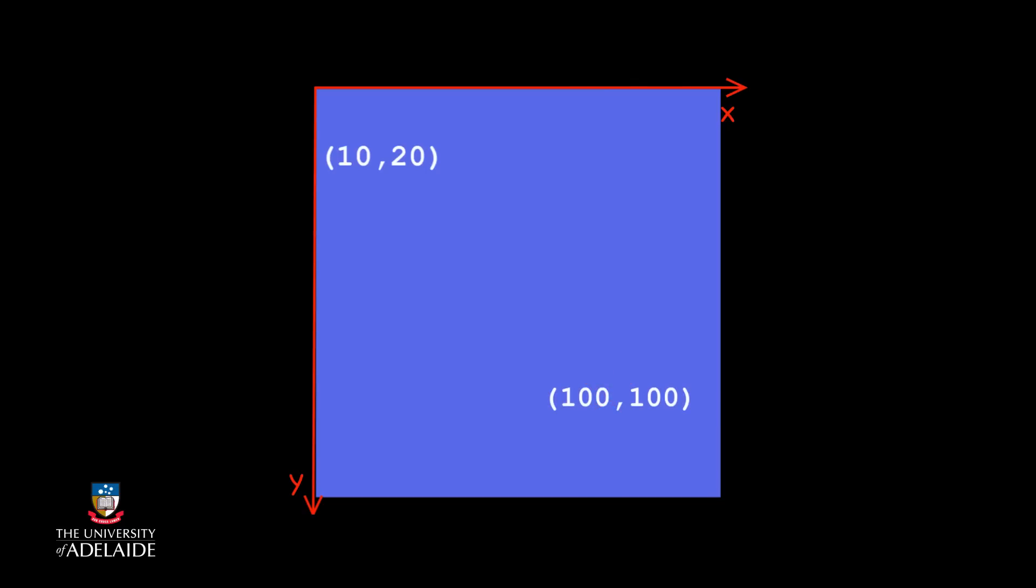For this example, we assume that our canvas has a size of 150 pixels by 150 pixels. To keep things simple, we decide to make the rectangles have the same size, say, width 40 and height 10.